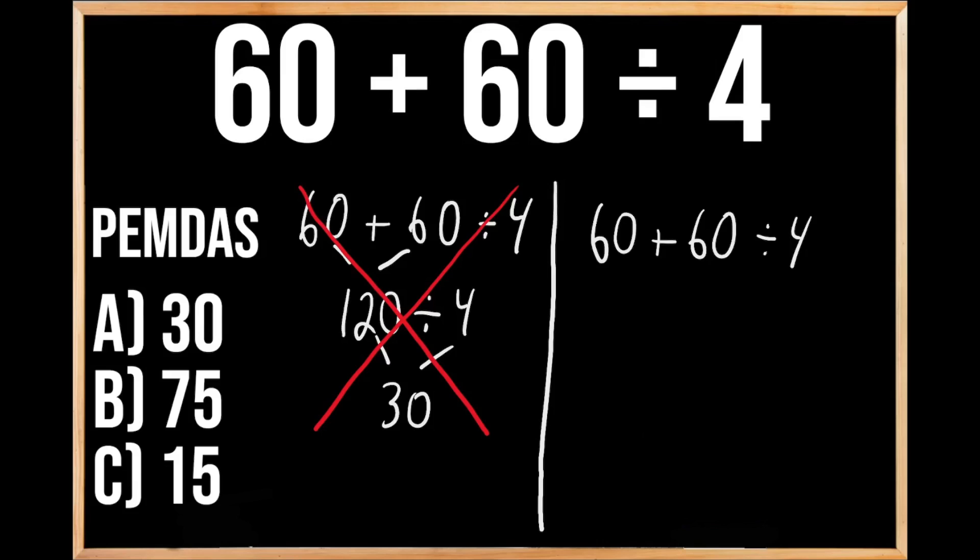The P in PEMDAS stands for parentheses, and the E stands for exponents, and since we don't have either one of those, we're going to move on to our next priority of multiplication or division. And here we do have division in this problem, so we're going to start out by dividing 60 by 4, which we know gives us 15, and then we're going to bring down the rest of the problem.